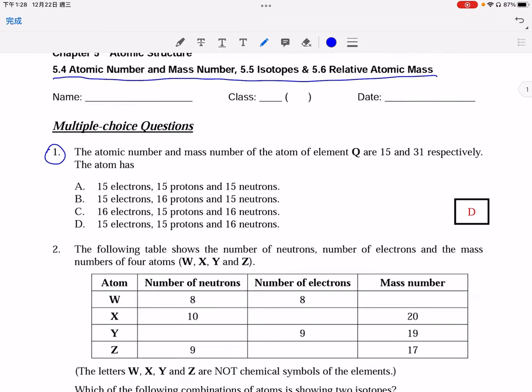Let's discuss the questions one by one. Question number 1 first. Make sure you know that atomic number is the number of protons or the number of electrons in the atom, while mass number is the number of protons plus number of neutrons in the atom. So for the atom Q with atomic number 15, it means that it has 15 protons and 15 electrons.